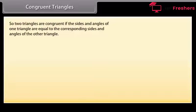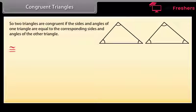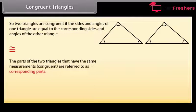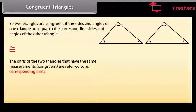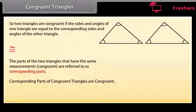Two triangles are congruent if the sides and angles of one triangle are equal to the corresponding sides and angles of the other triangle. The parts of the two triangles that have the same measurements are referred to as corresponding parts. This means that corresponding parts of congruent triangles are congruent — in short form, we write it as CPCTC.